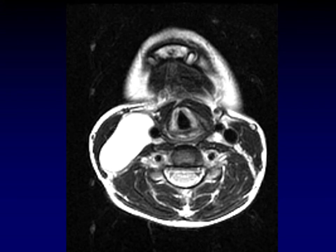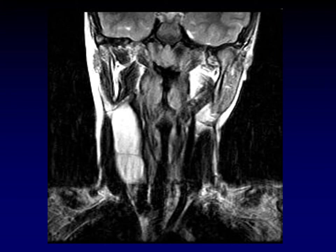Here's an example of a cystic mass on T2-weighted images deep to the sternocleidomastoid at about the level of the larynx. Is there anything that distinguishes this from a third branchial cleft cyst? Nothing on this image. But in the coronal plane, you really get a sense for how elongated and thin this septated lesion is — that's our clue that we're dealing with a thymic cyst. When I see an elongated cystic mass deep to the sternocleidomastoid muscle, that's when I invoke thymic cyst.